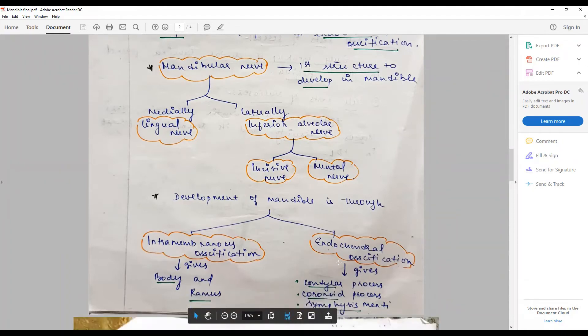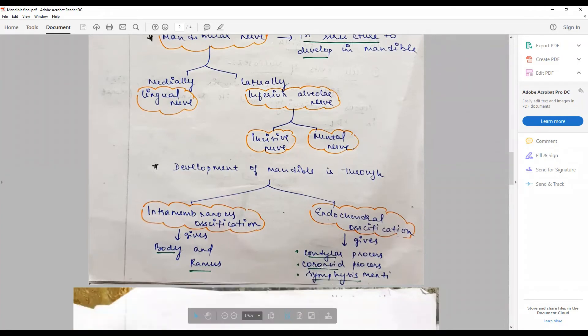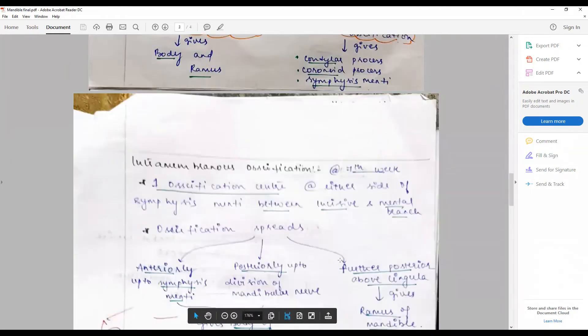Whereas endochondral ossification plays a big role in the condylar process, coronoid process, and symphysis menti region. Intramembranous ossification begins at about the seventh week, and the first ossification center is at either side of the symphysis menti between the incisive and the mental branch.